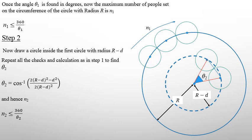Then we move to the second circle and repeat exactly the same idea, calculating theta 2 to find N2, the number of people on the second circle. Note that theta 2 is different from theta 1 because on the second, smaller circle you can accommodate fewer people.